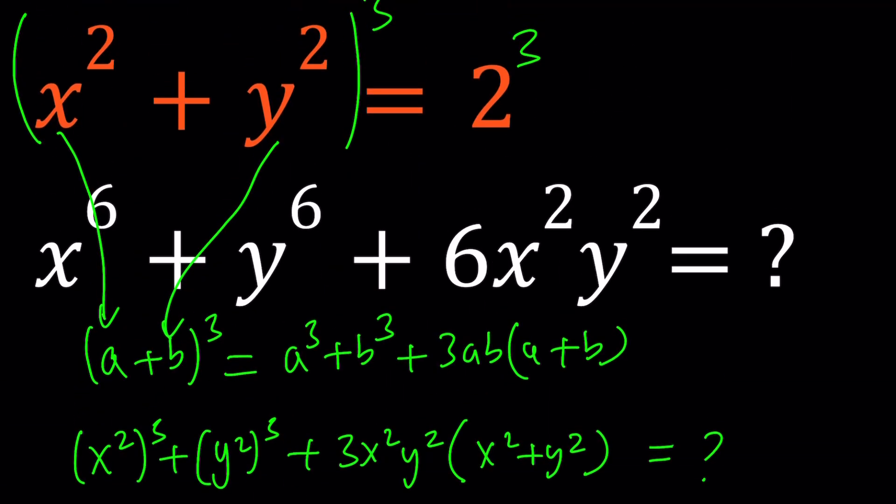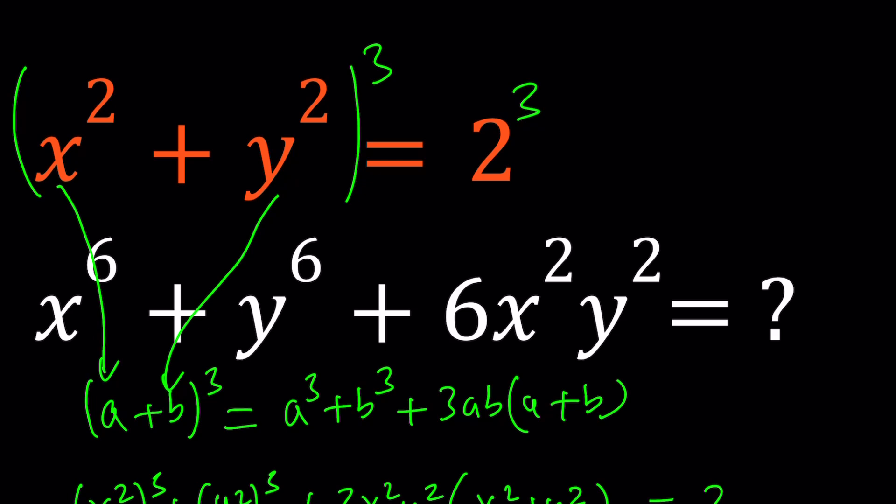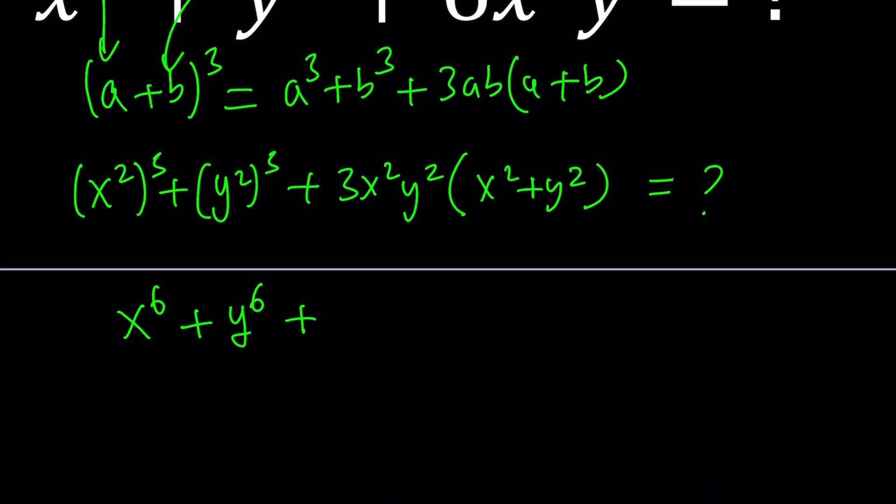We cubed it, but before we cubed it, remember, x squared plus y squared equals 2 was given, right? So we can directly substitute 2 for x squared plus y squared. Upon multiplication by 3, this will become 6x squared y squared.